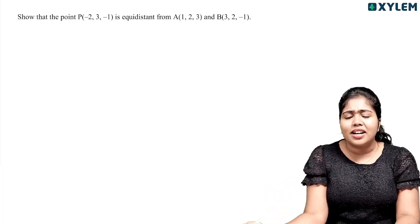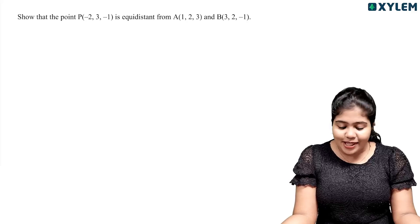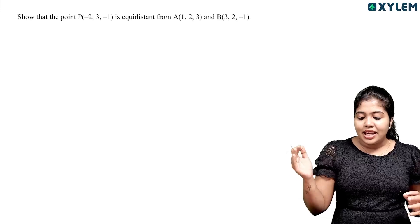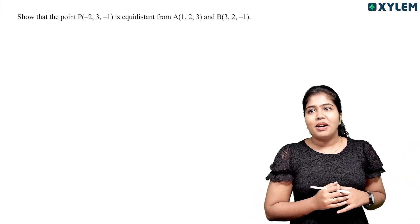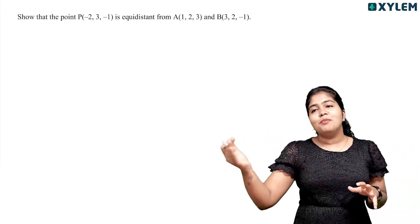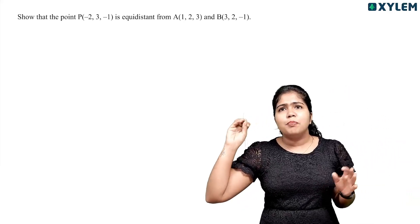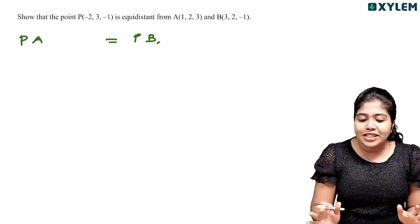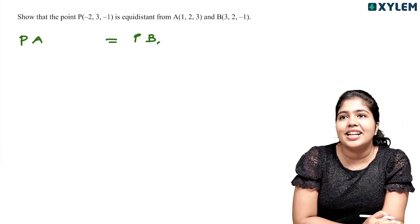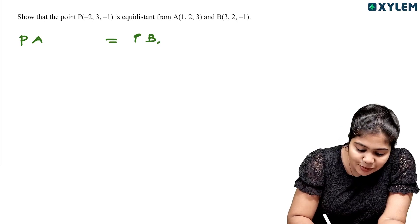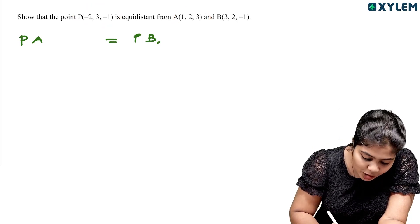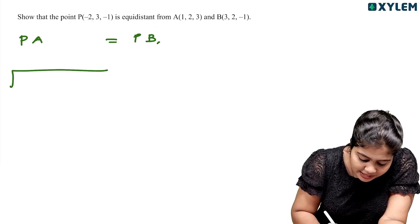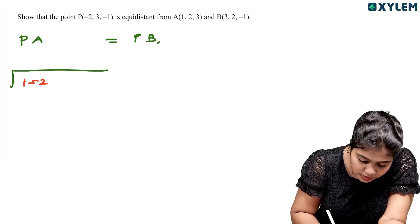It is important to know this question. Show that the point P(−2, 3, −1) is equidistant from A(1, 2, 3) and B(3, 2, −1). We need to prove PA = PB. So we find PA: root of (1−(−2))² + (2−3)² + (3−(−1))² = root of (1+2)² + ... which is root of 3² + ...